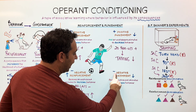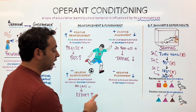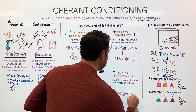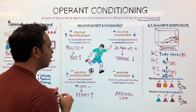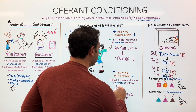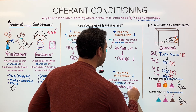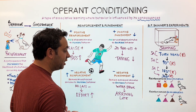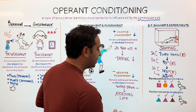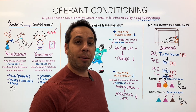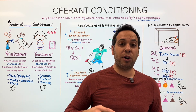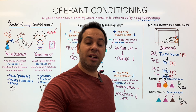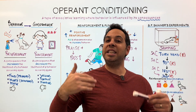Last one: negative punishment. I'm taking away something pleasant to decrease behavior. My player keeps arriving late to practice. So how do I take away something? Do you like water breaks? I bet they like water breaks, but because you keep doing something I don't want, you don't get a water break — you can watch the other players have a water break. I'm taking away something pleasant to decrease behavior. Negative punishment could also be: taking away your iPad, taking away your cell phone, or if you came home past curfew, taking away your car keys. The biggest thing to remember: positive means you add, negative means you remove. Reinforce — you want to increase behavior; punishment — we want to decrease or weaken behavior. This is operant conditioning.